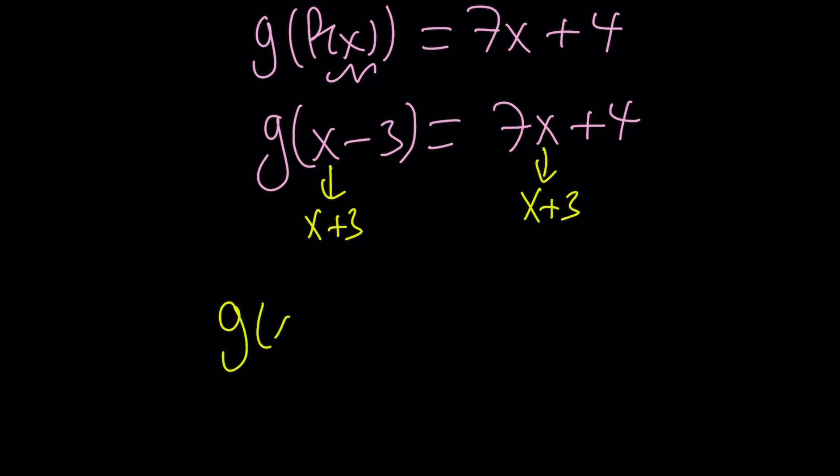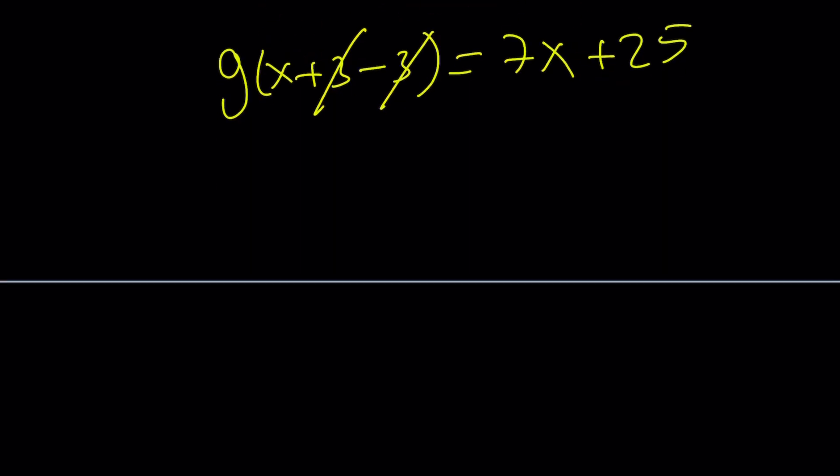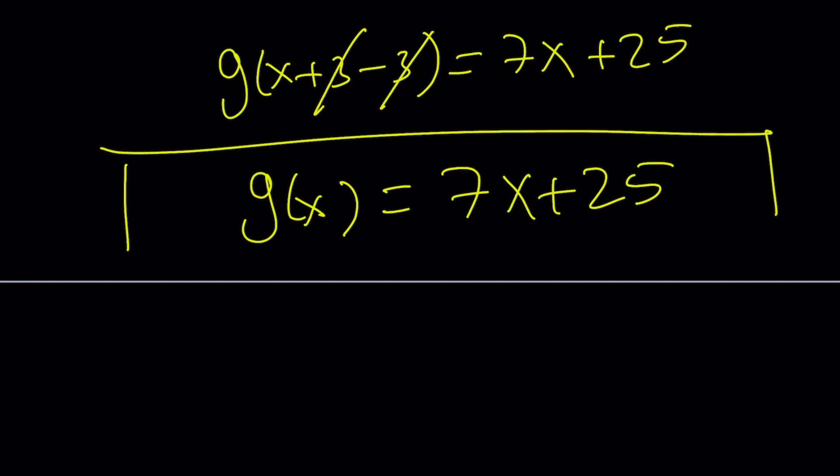And when you do, you're going to get g of x plus 3 minus 3, if you want to really see what it does. 7x plus 21 plus 4, 7x plus 25. And then the 3 is going to cancel out, and you're going to end up with g of x equals 7x plus 25. And this brings us to the end of this video. Thank you for watching. I hope you enjoyed it. Please let me know. Don't forget to comment, like, and subscribe. I'll see you next time with another video.